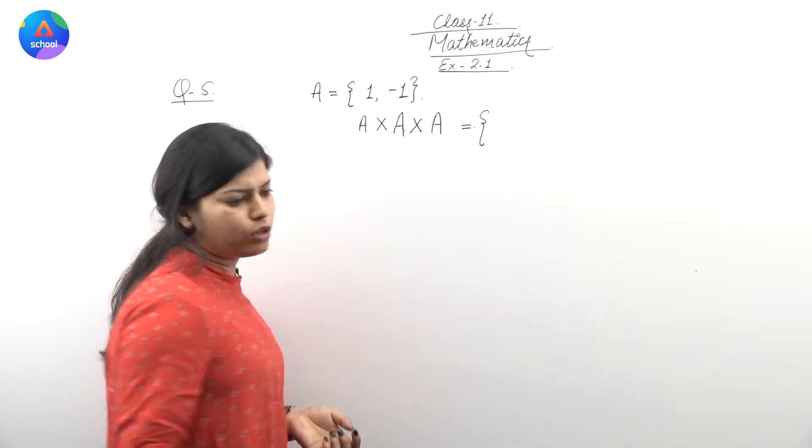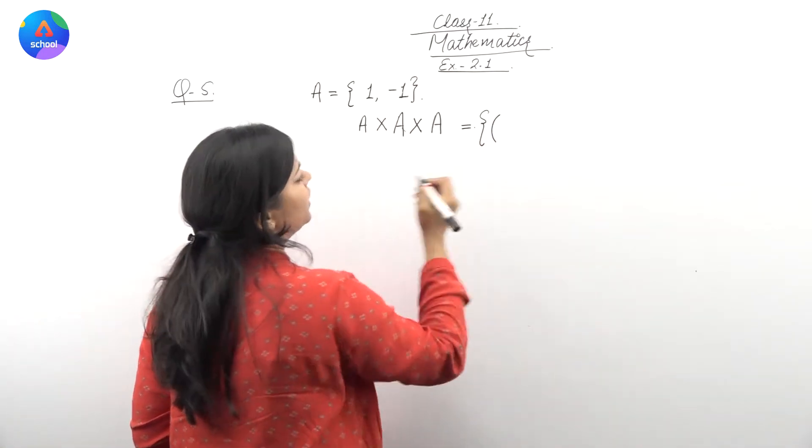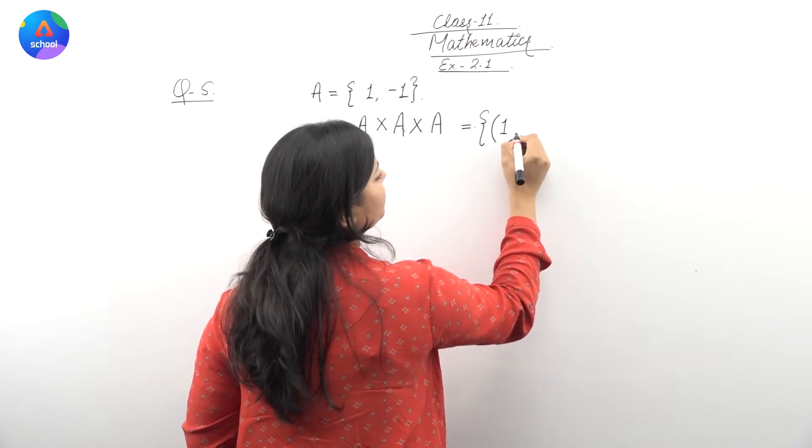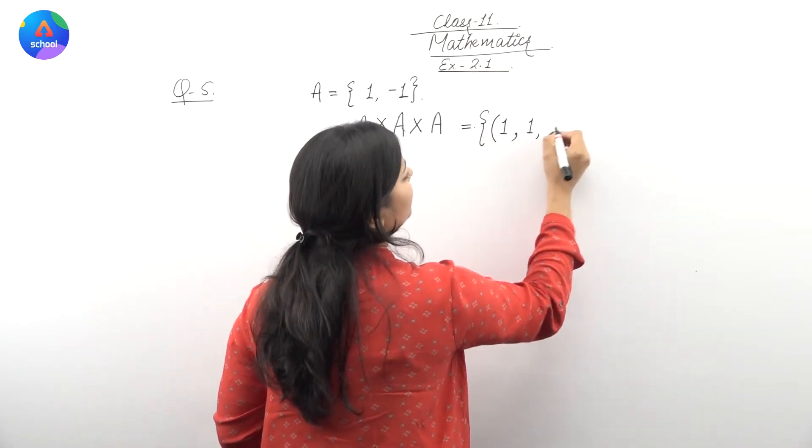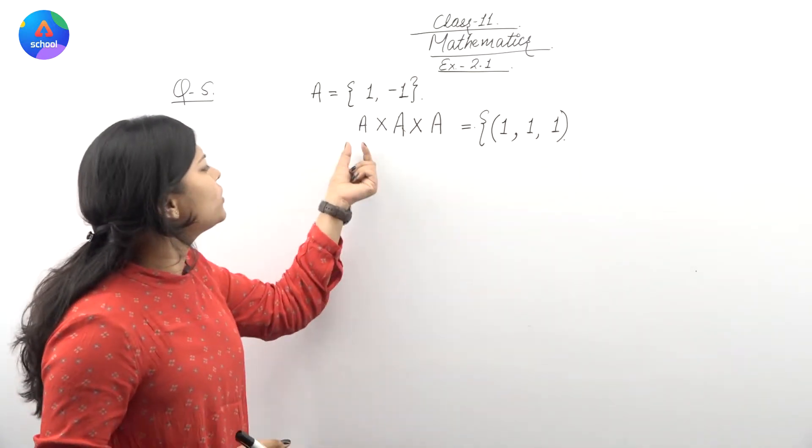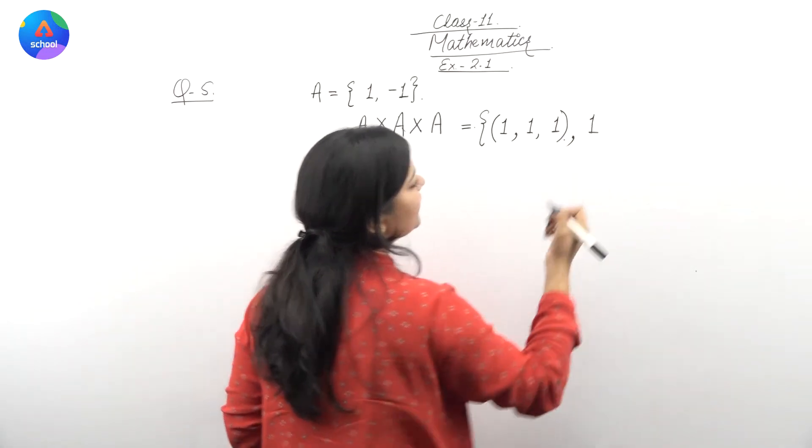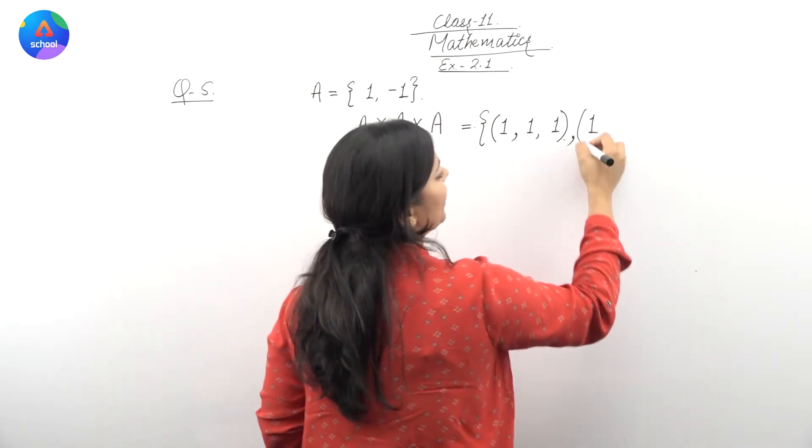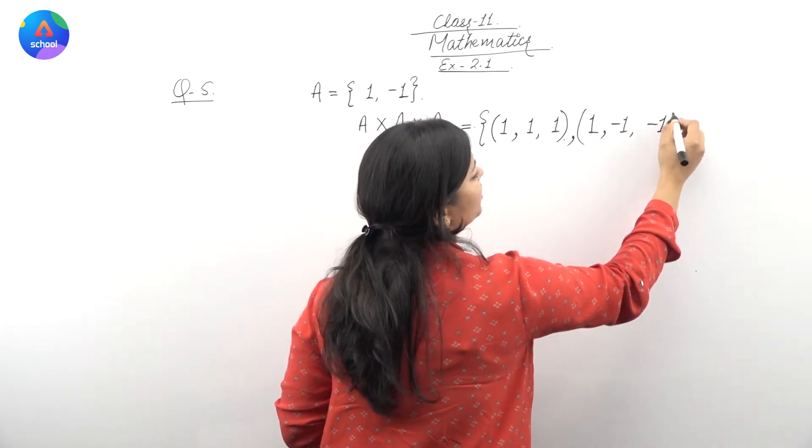Dekhta hain, humare paas kaise elements aengue ar konse elements aengue. First element me, mai yaha paas leheni hun. Uske baad, yaha paas again one, aur third bhi one. Kyunki dho noo sets, tino sets same hai, to yahi elements aengue. Agla element humare aega one, minus one, and minus one.